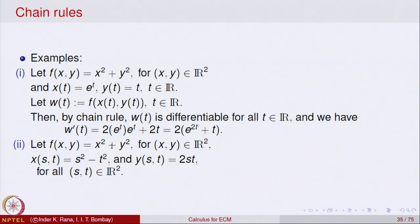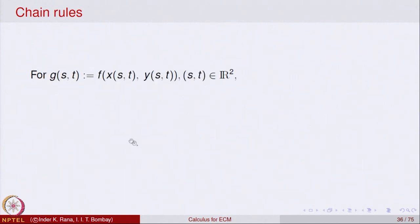Here f is a function of two variables x and y, x itself is a function of two variables s and t, and y also is a function of two variables s and t. The composite function is g(s,t) = f(x(s,t), y(s,t)) for s, t belonging to R. So g is a function of two variables and will have partial derivatives with respect to s and with respect to t.